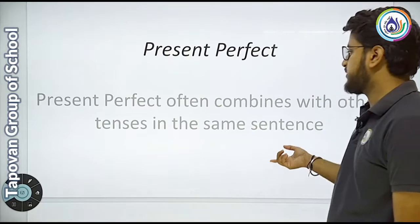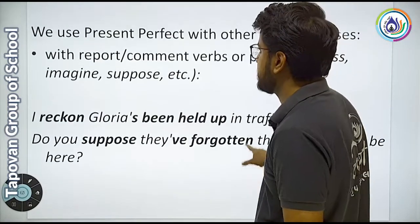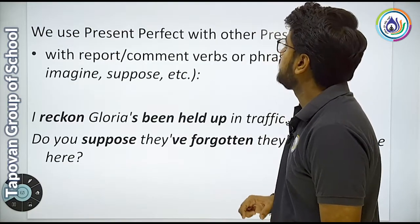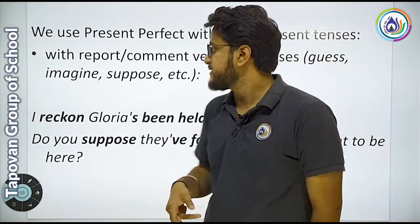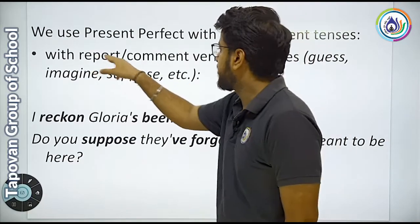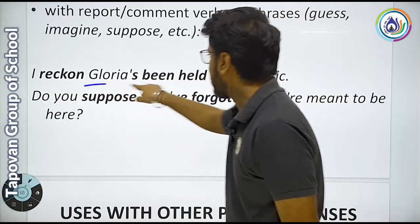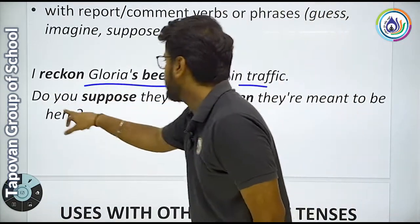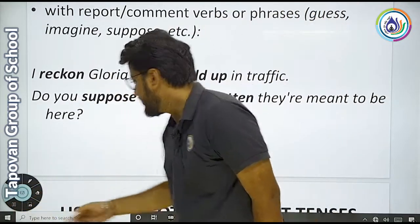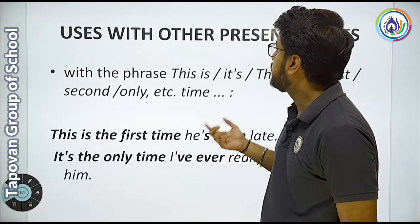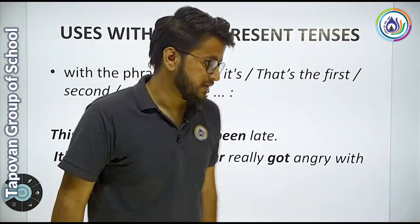Present perfect often combines with other tenses in the same sentence. जो present perfect है वो same sentence के साथ combine करेगा. We use present perfect with other present tenses — हम present perfect जो है वो other present tense के साथ use कर सकते हैं. With report, comment, verbs और phrases के साथ use कर सकते हैं. Example: I reckon Gloria has been held up in traffic. Do you suppose they have forgotten?